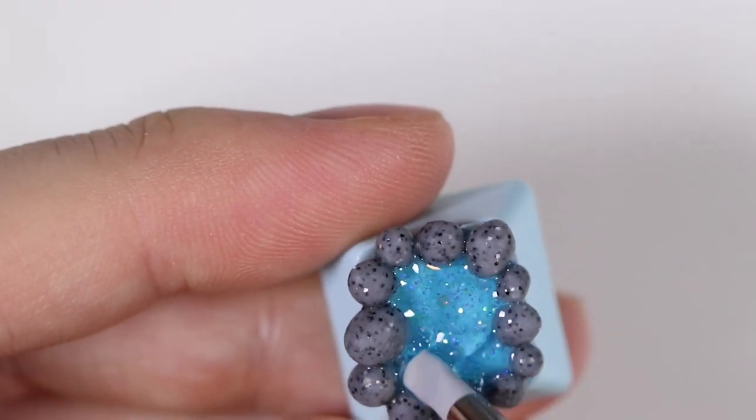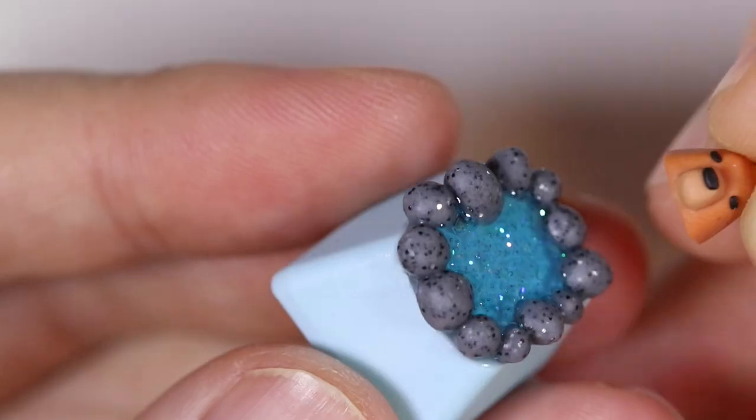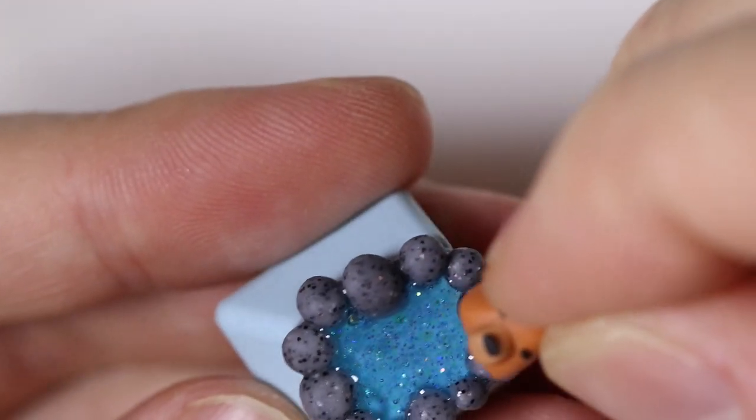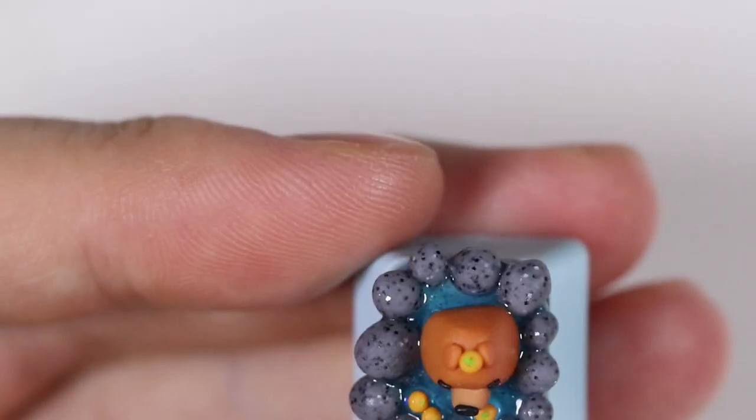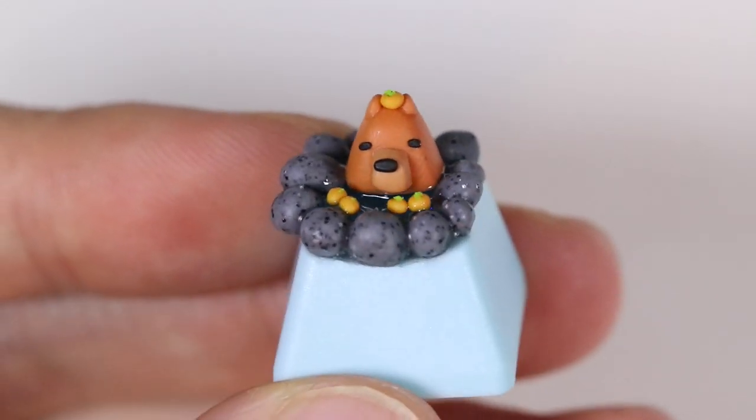Then for the next one, we're going to do the capybara. So I'm adding my layer of resin as glue and putting my capybara into the middle of the hot spring. And then I'm adding these tiny little oranges that I made. It's the same one as the one I made on top of its head. And then that cure as well.